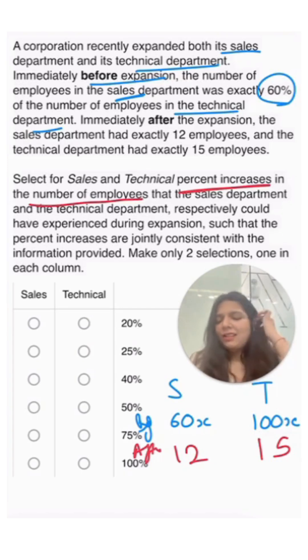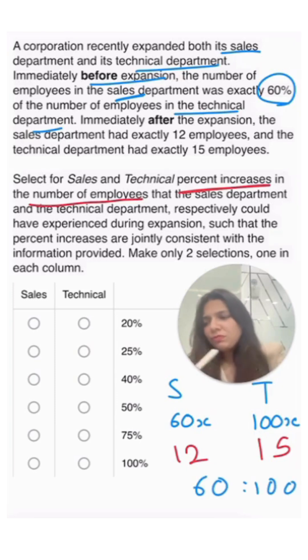Here we can do two things: either try out every single value or apply some logic. Before expansion, the ratio is 60 to 100. If we simplify that, 60 to 100 comes out to 3 to 5.